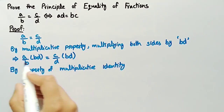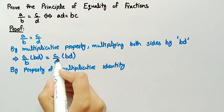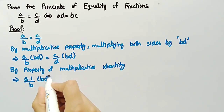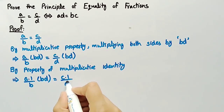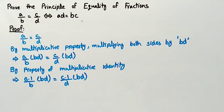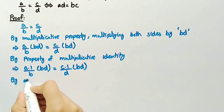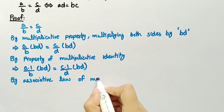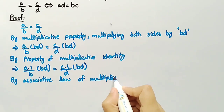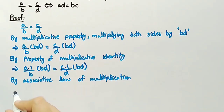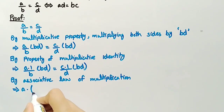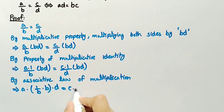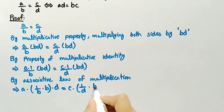a can be written as a·1 and c can be written as c·1. So we get a·1 divided by b, into b·d, equal to c·1 divided by d, into b·d. By the associative law of multiplication, we can write it as a·(1/b)·b·d equal to c·(1/d)·b·d.